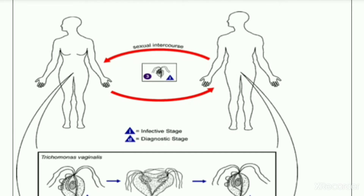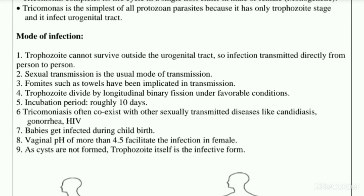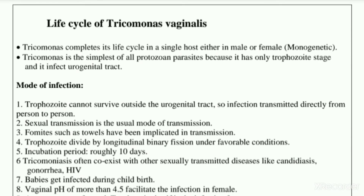During sexual intercourse, if any one person — male or female — is infected, they transfer the trophozoite to the other person. The trophozoite is found in vaginal and prostatic secretions and in urine, and it undergoes multiplication by longitudinal binary fission. The trophozoite can be found in the vagina or the orifice of the urethra.